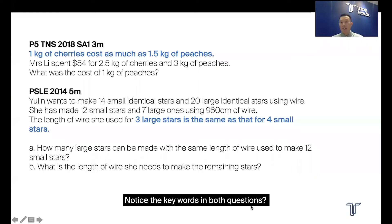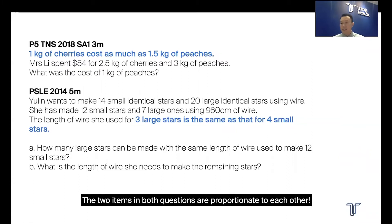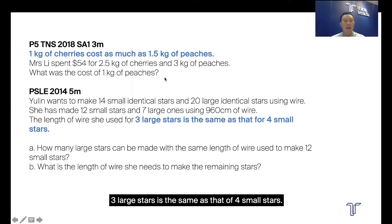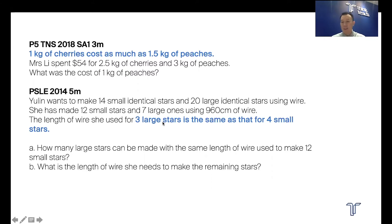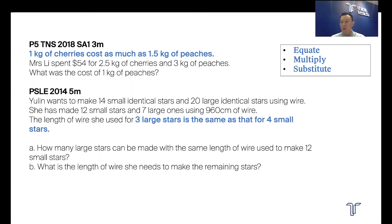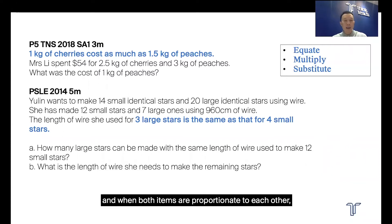Okay, so here we go. Notice the keywords in both questions — the two items in both questions are proportionate to each other. One kg of cherries costs as much as 1.5 kg of peaches in the first question, and three large stars is the same as that of four small stars. In ThinkTeach, we have a consistent approach to tackling such questions. When we see more than one variable and both items are proportionate to each other, we will identify it as a substitution question type.